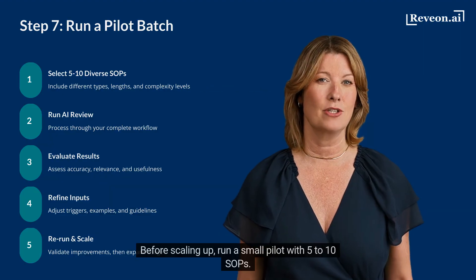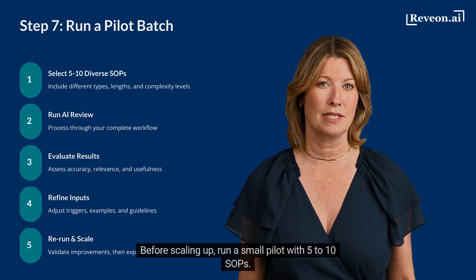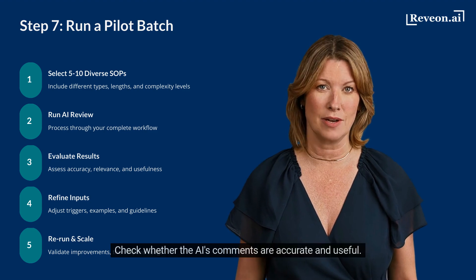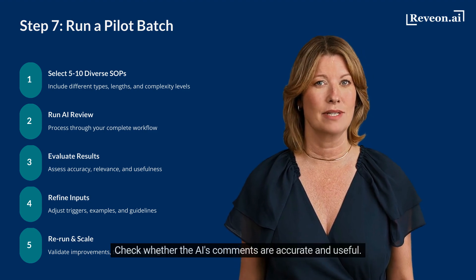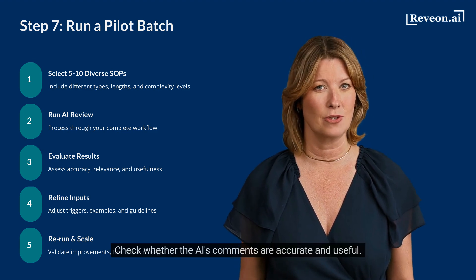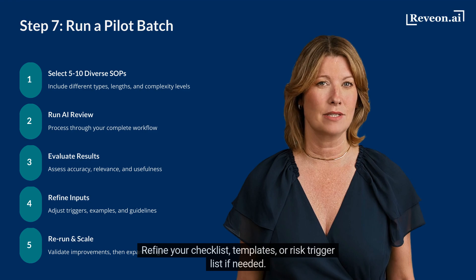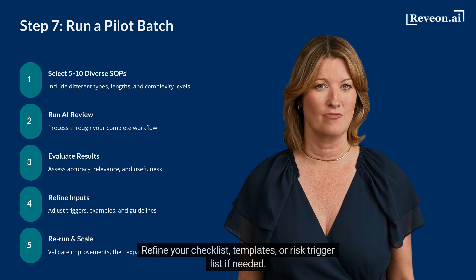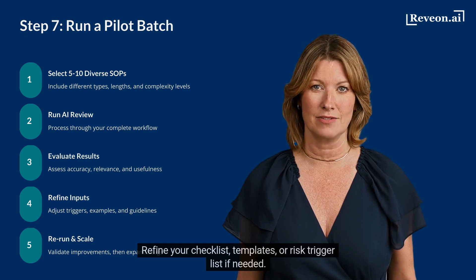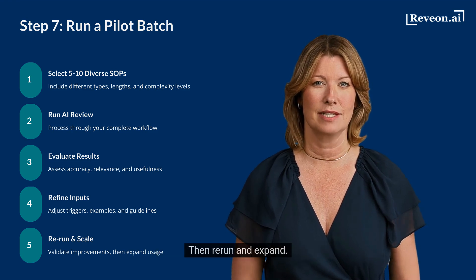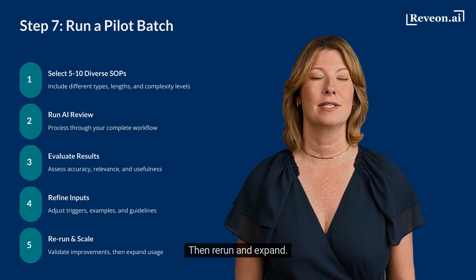Before scaling up, run a small pilot with 5 to 10 SOPs. Check whether the AI's comments are accurate and useful. Refine your checklist, templates, or risk trigger list if needed, then re-run and expand.